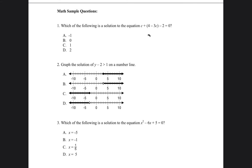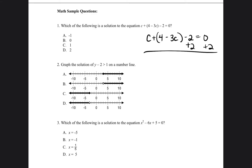We have c plus 4 minus 3c minus 2 equals 0. We're going to add 2 to both sides. c plus 4 minus 3c is equal to 2.